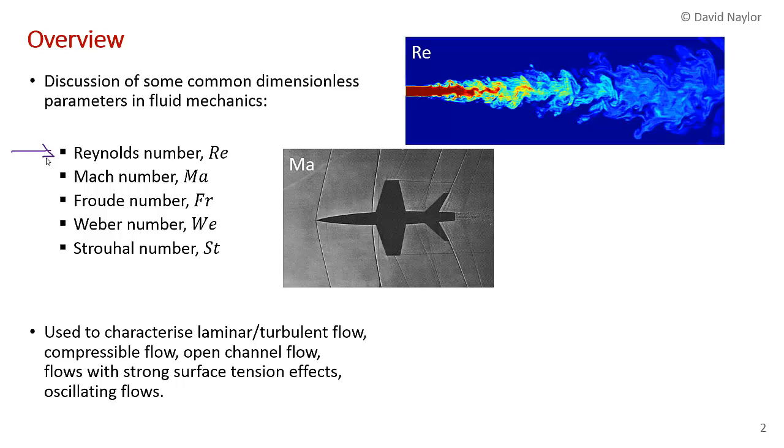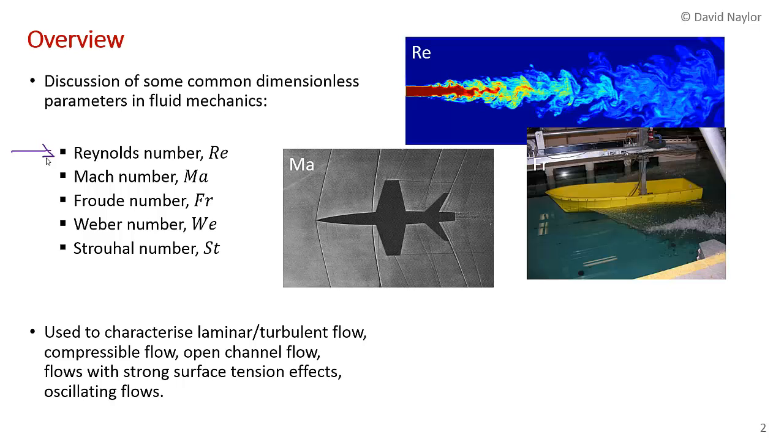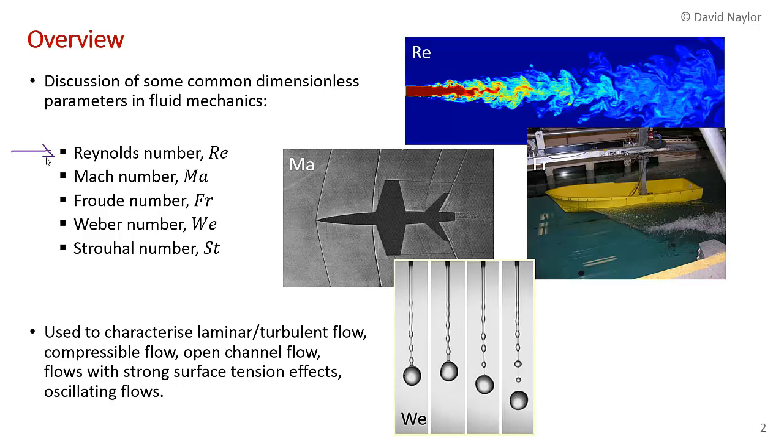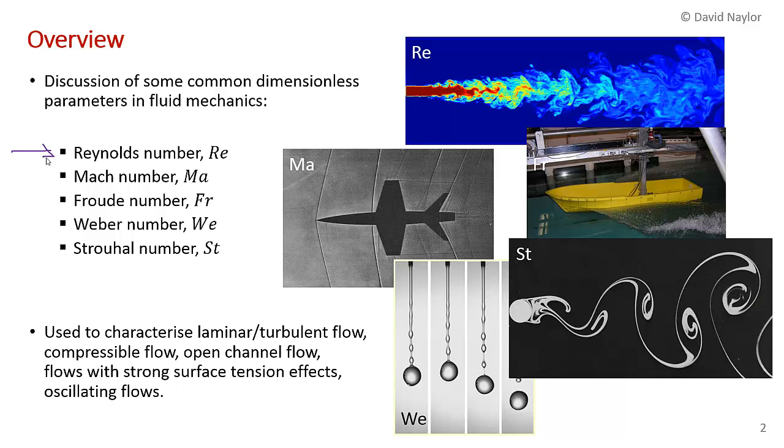There's also the Mach number, which has to do with compressible flows. There's something called the Froude number, which has to do with free surface flows. There's another number called the Weber number, when surface tension effects are important. And yet another number called the Strouhal number, when you have oscillating flows.